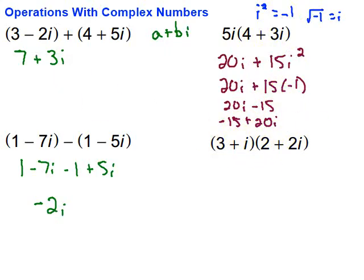Let's take a look at this last one here. In this case, we have two binomials that are being multiplied. So I want to foil this. So I'm going to take 3 times 2, which is going to be 6. Then 3 times 2i is going to be plus 6i. Then we've got i times 2, which would be 2i. And then we've got i times 2i, which is going to be plus 2i squared.